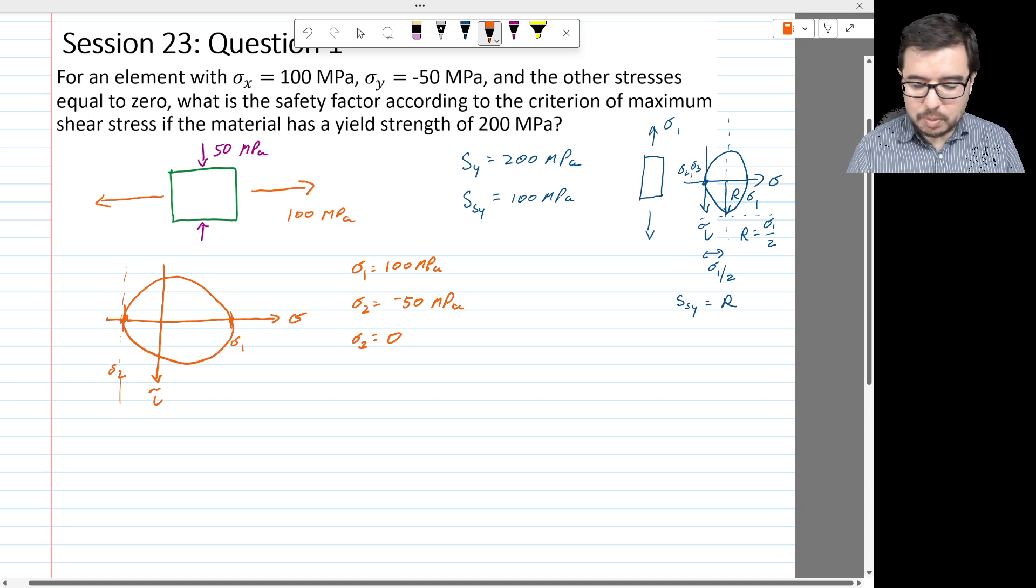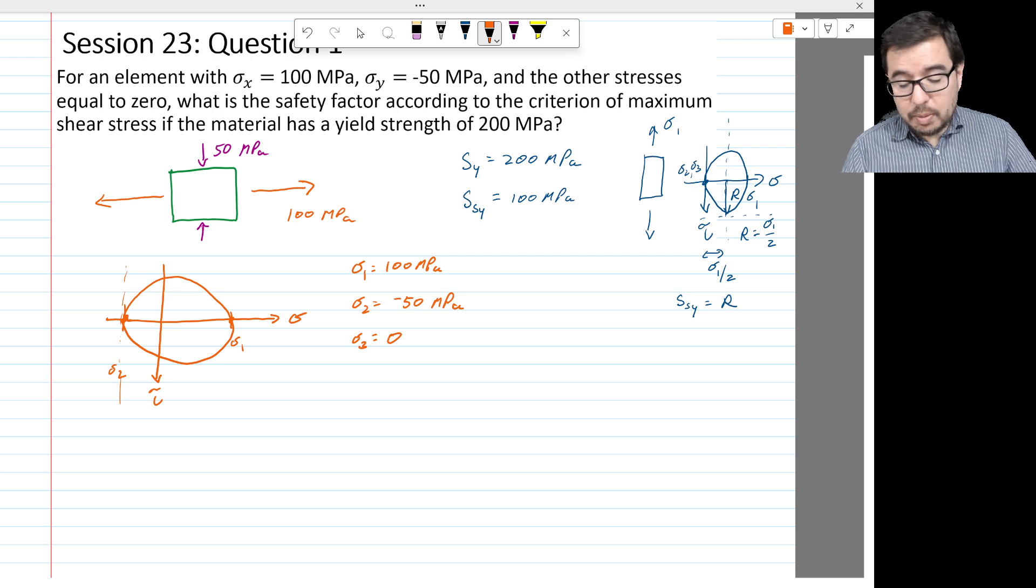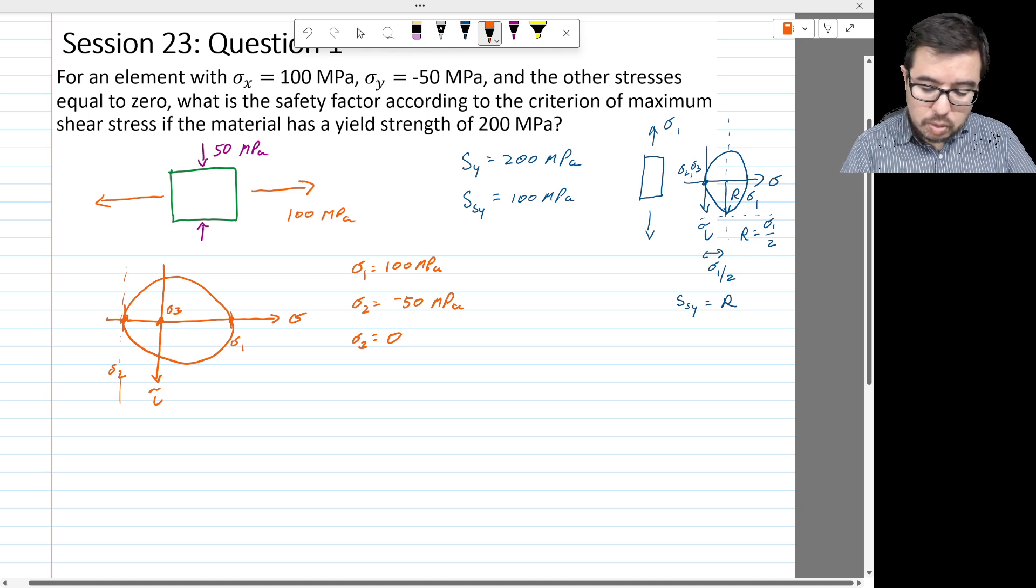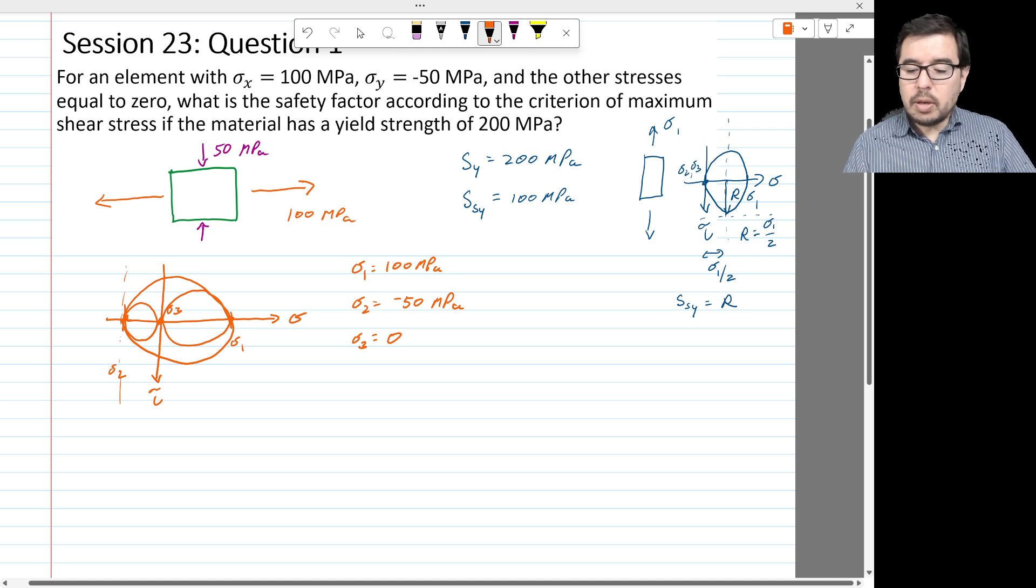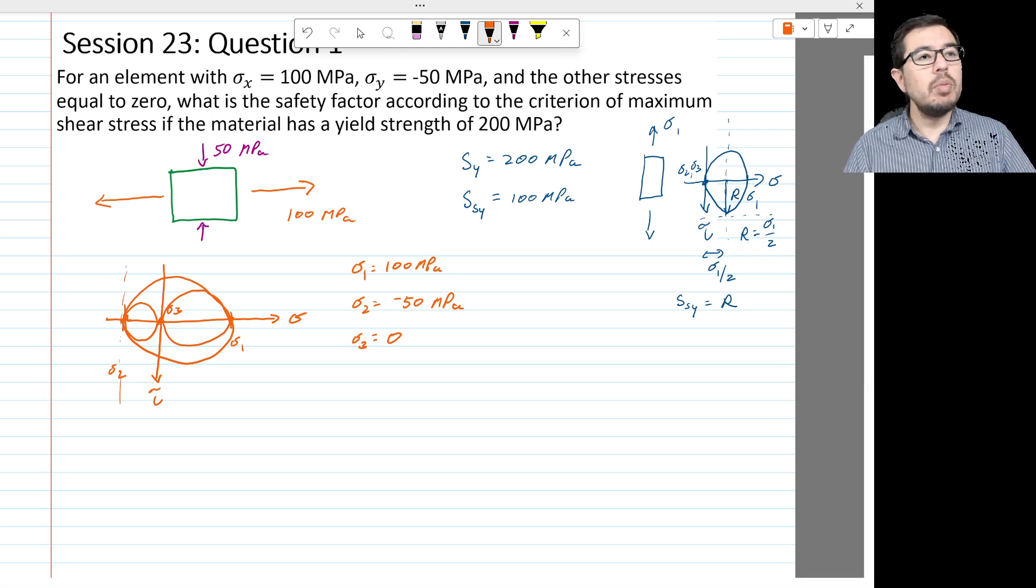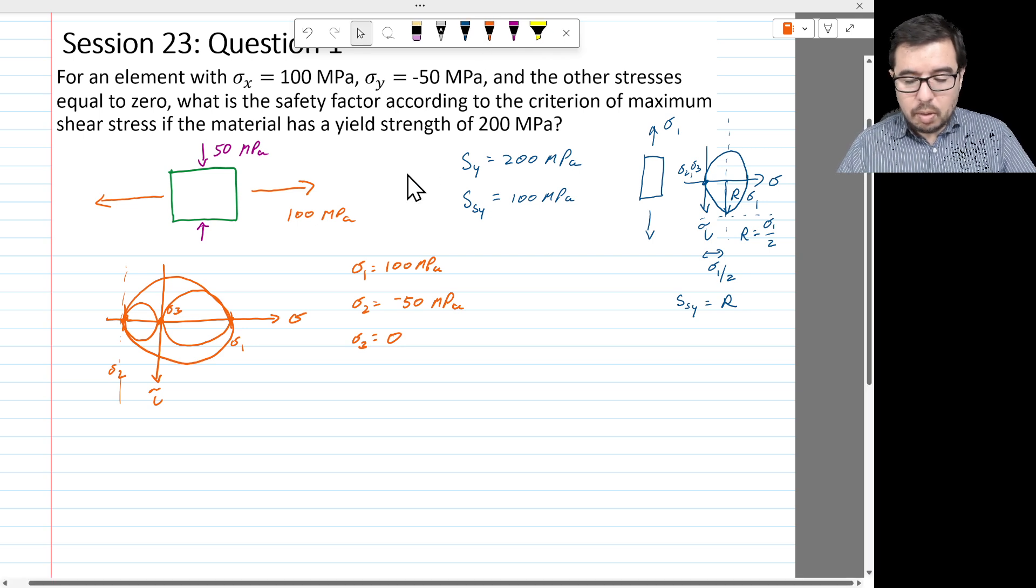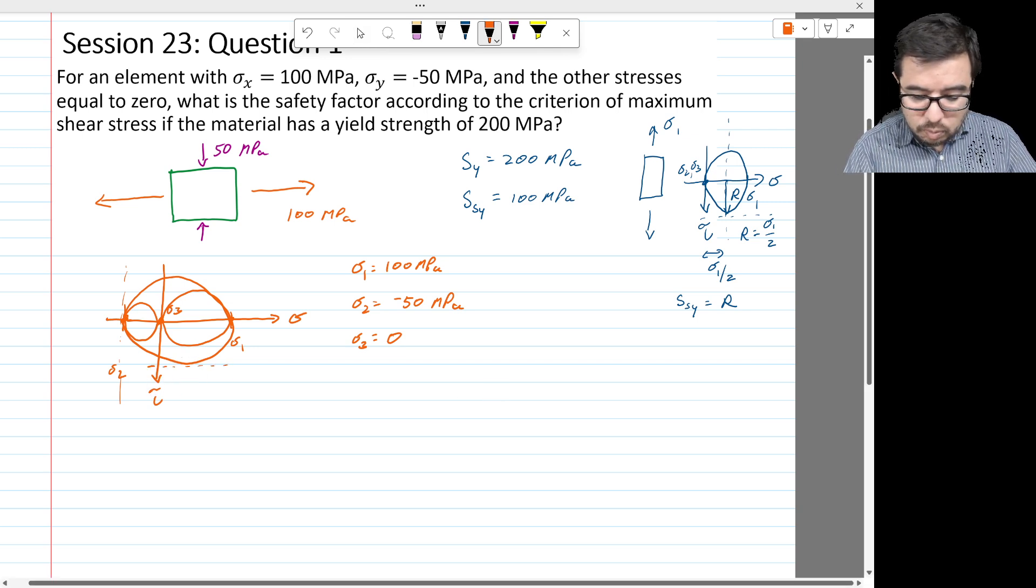So this is a Mohr circle. The sigma 3 is in the middle at zero. So that means that we have these other Mohr circles as well. We're using the criterion of maximum shear stress, though. So we're going to be interested in the maximum shear stress, or the absolute maximum shear stress, which is part of an equivalency in this Mohr circle. So where are we going to find the absolute maximum shear stress? We're going to find it down here. This is where it's going to be tau absolute max.